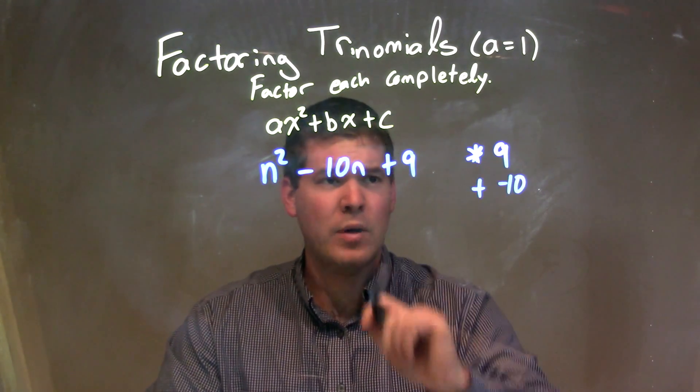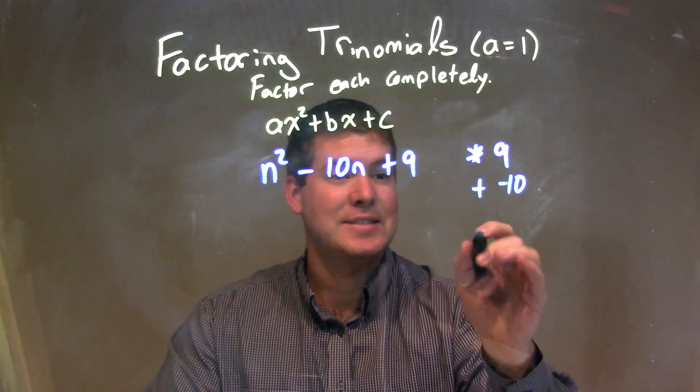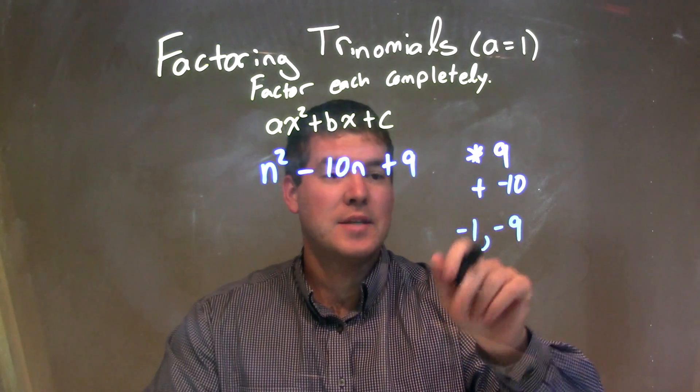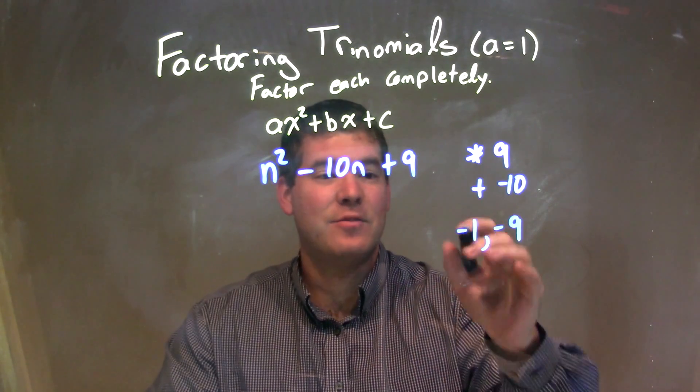What two numbers multiply by 9, but add to be a negative 10? The way I see it is a negative 1 and a negative 9. Negative 1 times negative 9 is a positive 9, but when I add them together, negative 1 plus negative 9, I get a negative 10.